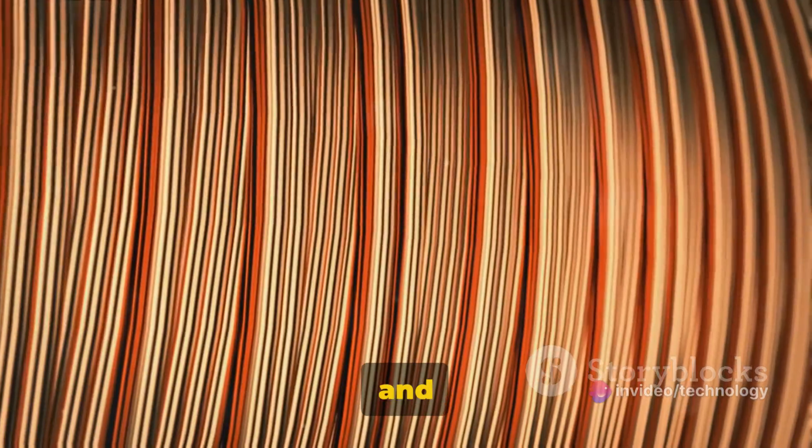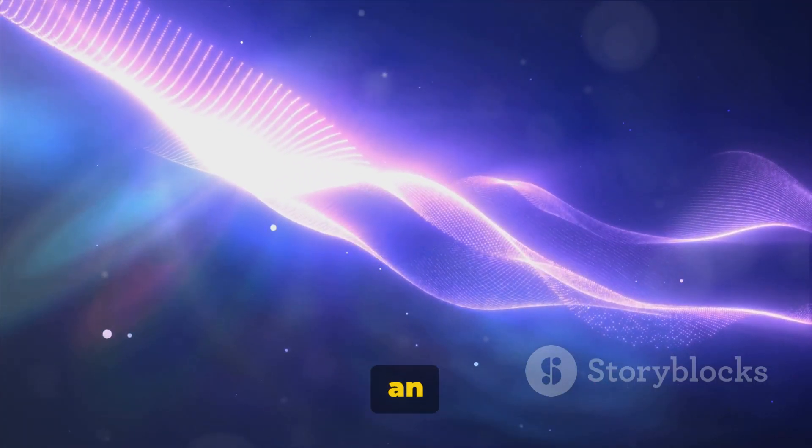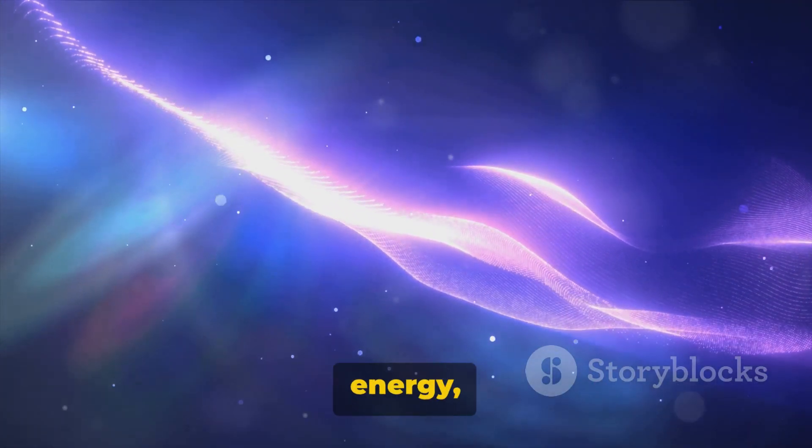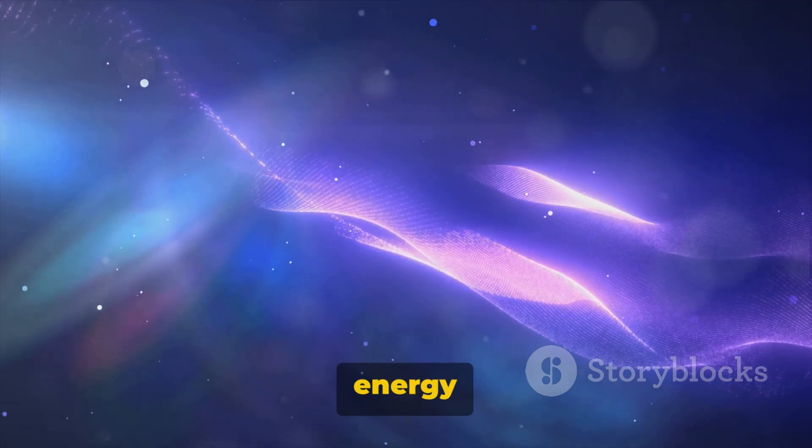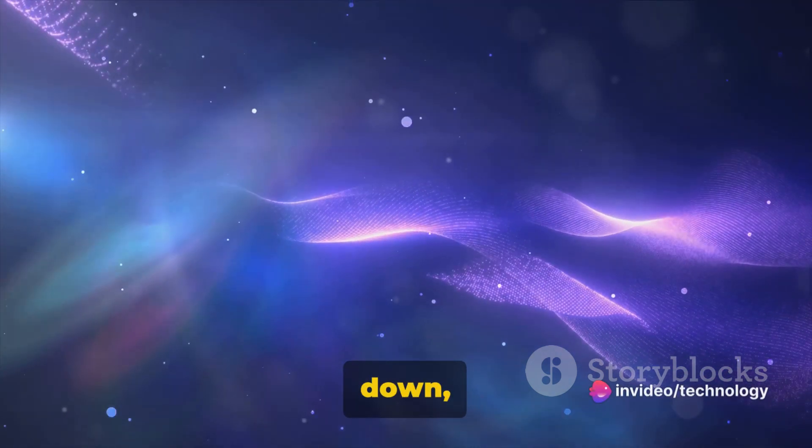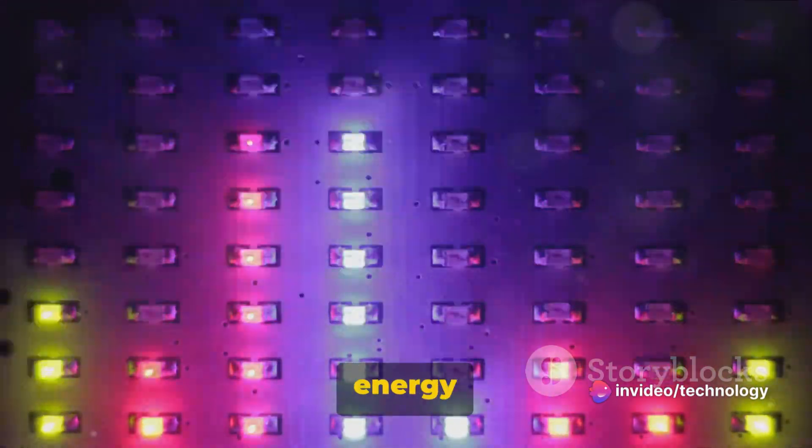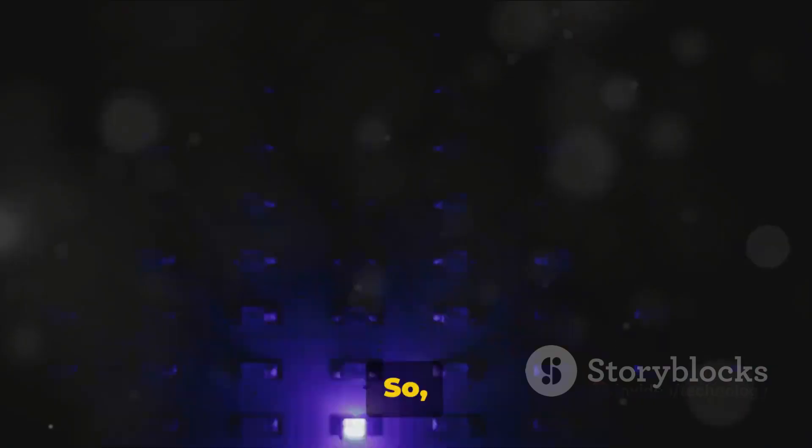Even the colors we see are a result of how electrons absorb and emit light. When light hits an object, its electrons absorb energy, jump to a higher energy level, then fall back down, releasing energy in the form of light. The color of that light depends on how much energy the electrons release.